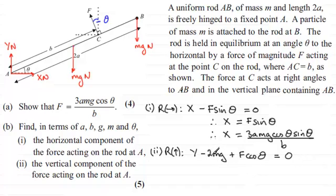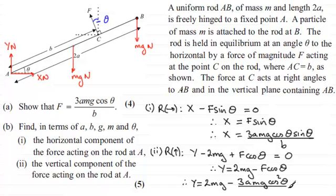So if I rearrange this now, making y the subject, we've got y equals 2mg, and then minus F cos theta. And again, if we substitute for F now, we end up finally with y equals 2mg minus, for F we'll just copy that in, 3amg cos theta. And if we multiply it with this cos theta, might as well say cos squared theta, and all of that is divided by b. And there you have our two components, x and y.